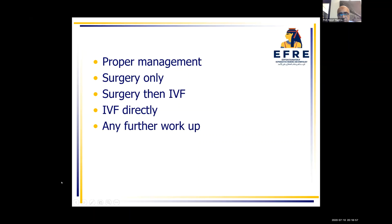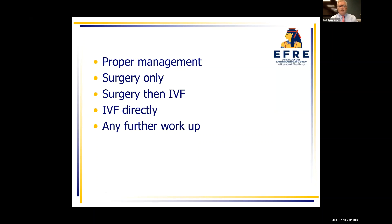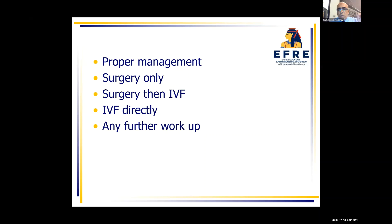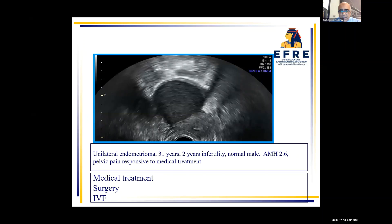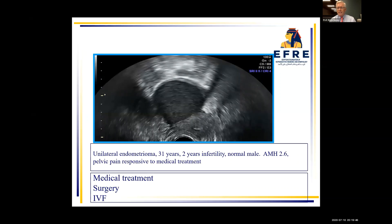Which line of management would you choose for this case? Professor Bruce responded: I like a choice that includes doing IVF first to make your embryos, and then going back and taking care of the endometriomas if she does not get pregnant or has implantation defects. You can always do a second IVF and try to get enough embryos so that surgery then is not such a risk. But this is a difficult case.